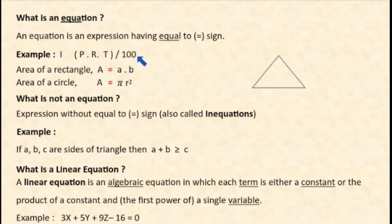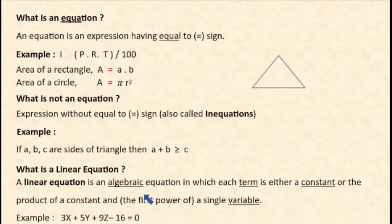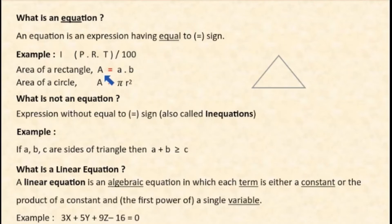Now, is I equal to P into R into T by 100 a linear equation? No, it is not a linear equation. By definition, a linear equation is one where each term is either a constant or the product of a constant and a single variable. Here, P, R, and T are all variables, making it a product of three variables. So this is not a linear equation.